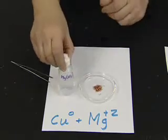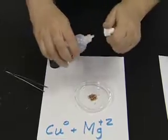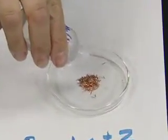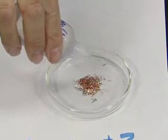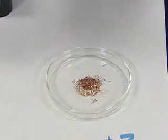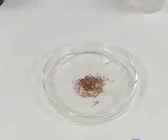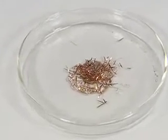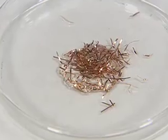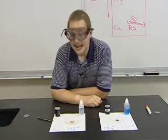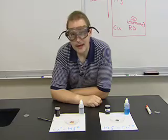All right, let's see if this works. Well, would you look at that. It started out copper color, and it's still copper colored. Well, I guess copper can't be oxidized by magnesium ions.